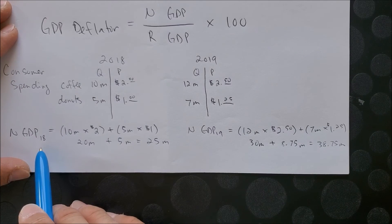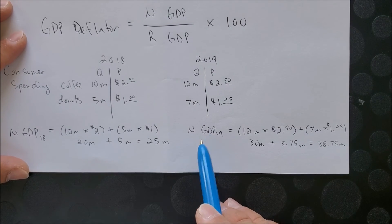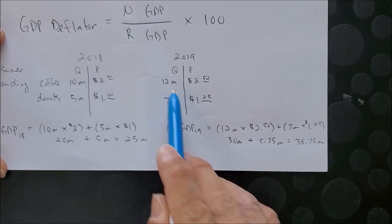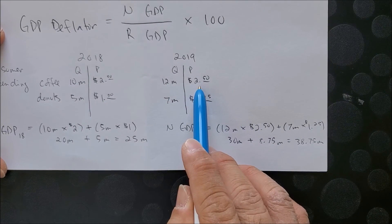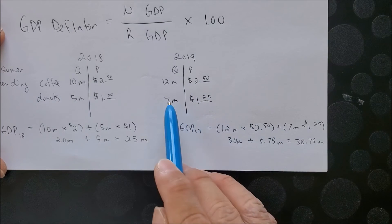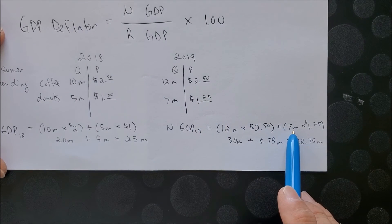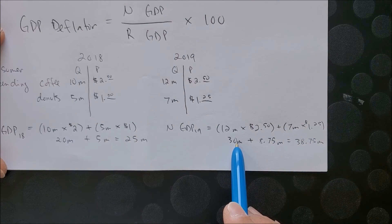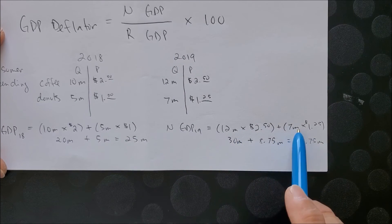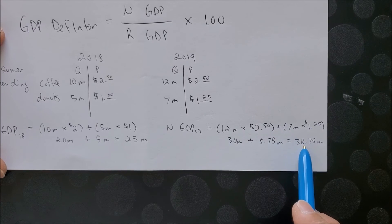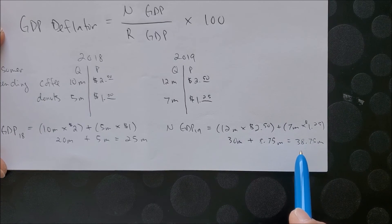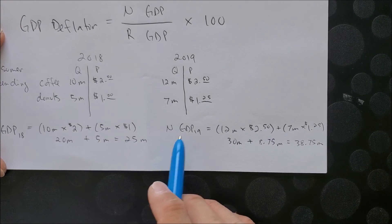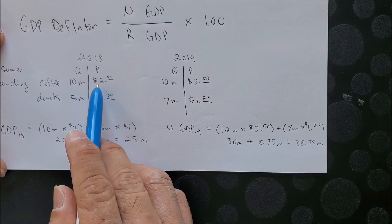For 2019, here we have 12 million coffee times $2.50 plus 7 million doughnuts times $1.25. We have $30 million for coffee plus $8.75 million for doughnuts to get $38.75 million for the nominal value 2019.